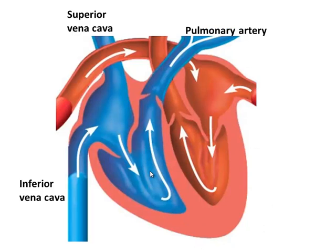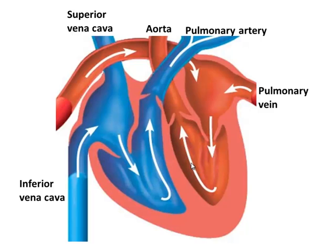Blood will leave the right ventricle through the pulmonary artery — pulmonary has to do with lungs. Blood will enter the left atrium through the pulmonary vein. And finally, blood will leave the left ventricle through the aorta, the largest artery in the body. So veins are bringing blood back into the atria, and arteries are taking blood out of the ventricles and off to the rest of the body.